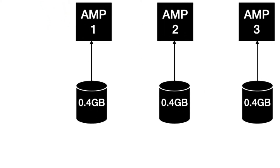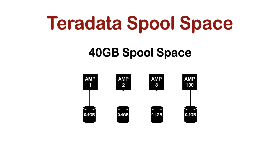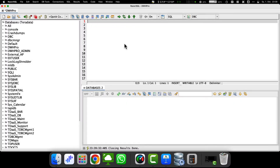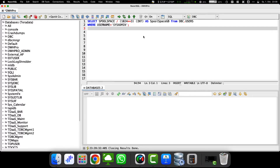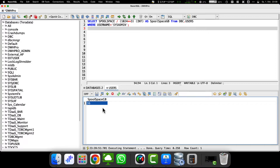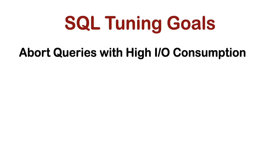By the way, it is pretty easy to find out the Spool Space of a user with the following query. If you're wondering why there's a Spool limit per user at all, here's why: a limit is needed to abort requests with too high a consumption of resources. Even if high Spool Space usage does not always mean a bad query, the correlation between bad queries and high Spool Space usage is high.